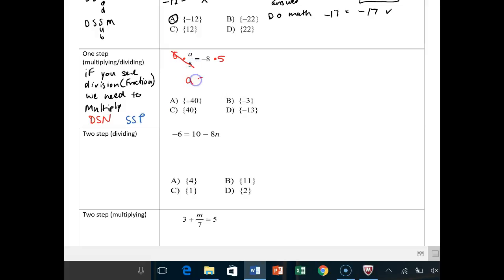I'm left with A is equal to, and this is a DSN, different signs negative. Negative 8 times 5 is negative 40. And notice how I have 40 on there as well. So you've got to be prepared to know your integer rules.